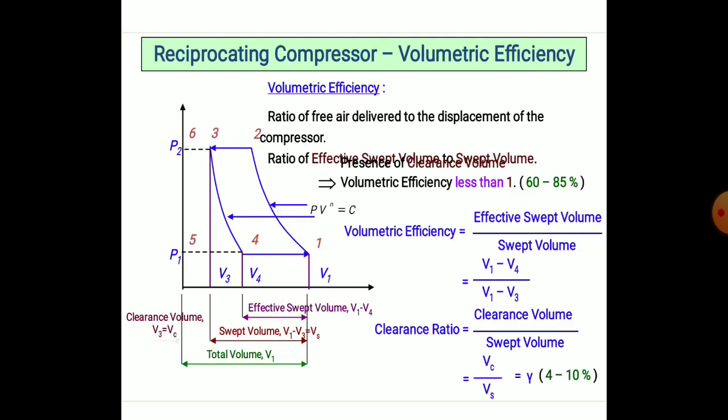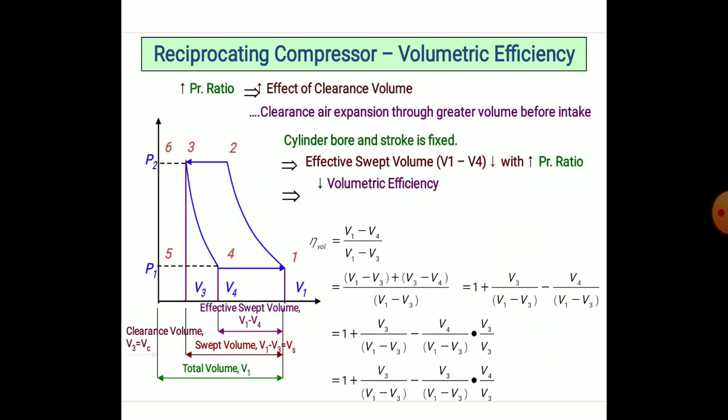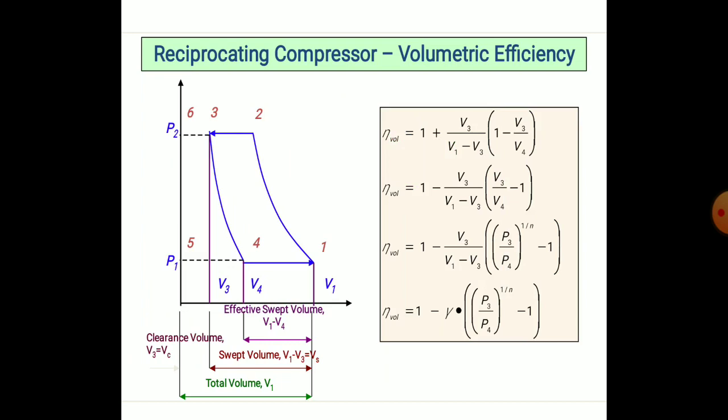Volumetric efficiency is the most important technical aspect. It is defined by the clearance volume between the piston walls of the reciprocating compressor. The effective swept volume from the PV diagram, from V1 to V4, gives the ratio for volumetric efficiency. The formula is: η_vol = (V1/P1) / (P4)^(1/n − 1). The swept volume can be calculated using this formula, and the total volume from V1 to V6 can also be calculated mathematically and from the PV diagram.